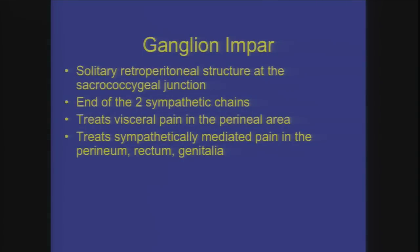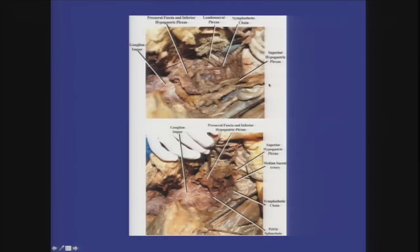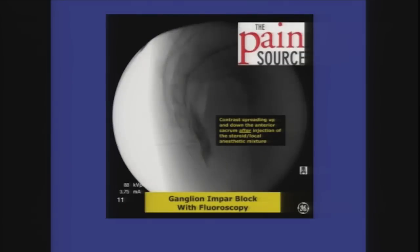One less solitary structure is the end of the sympathetic chain — called the ganglion impar or ganglion of Walther. Blockade of this bundle can treat visceral pain in the perineal area or isolated tailbone pain. We place a needle through the sacrococcygeal junction, infiltrate a little contrast to confirm placement, then place numbing medication and additives to hopefully achieve a couple months of pain relief.